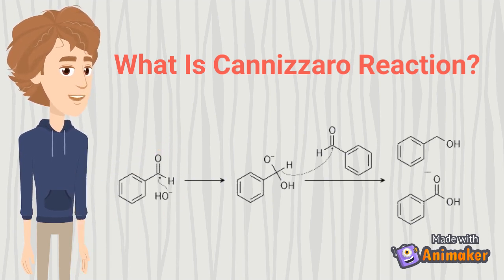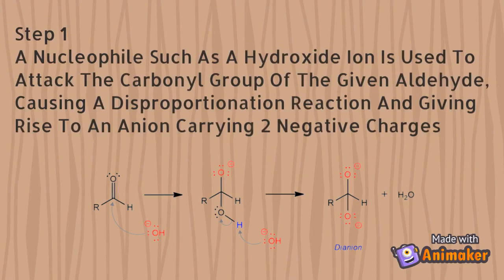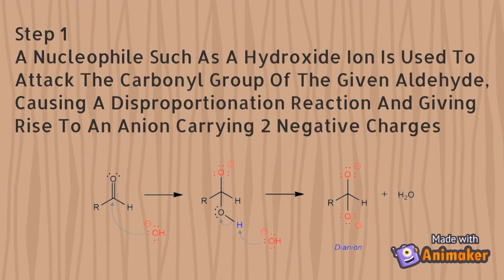A tetrahedral intermediate results from the attack of hydroxide on a carbonyl. Step number 1: a nucleophile such as a hydroxide ion is used to attack the carbonyl group of the given aldehyde, causing a disproportionation reaction and giving rise to an anion carrying two negative charges.